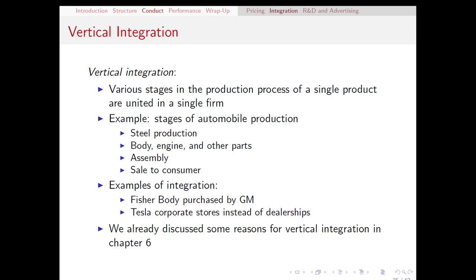Different automakers have chosen to integrate different parts of this process. For example, General Motors, a few decades ago, purchased one of its body manufacturers called Fisher Body and integrated all of their operations right into GM. Another more recent example would be Tesla. While most auto companies rely on largely independent dealerships to sell their cars to the consumer, Tesla has integrated by having corporate stores rather than independent dealerships. This is also a difference in how the integration came about: the Fisher Body and GM example happened through a merger, whereas Tesla was integrated from the very beginning.